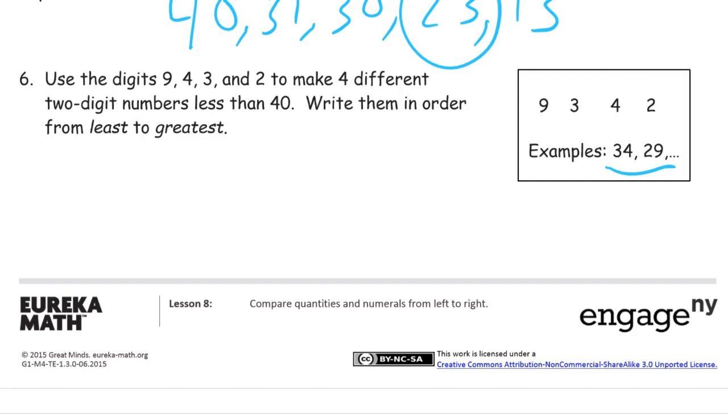It can't start with nine because that would be 90, and anything in the 90s is going to be bigger than 40. And then we have four. So that would make 42, which would be bigger than 40, or 43, which is bigger than 40, or 49, which is bigger than 40. So we can't have nine tens and we can't have four tens. We can only have three tens or two tens.